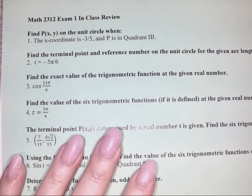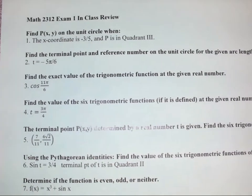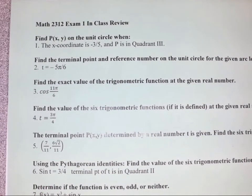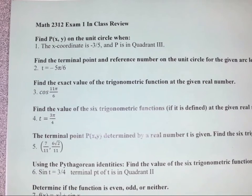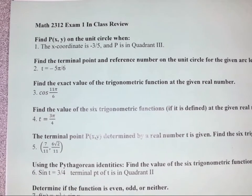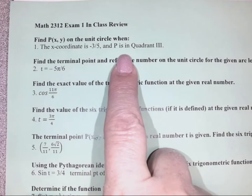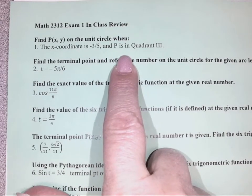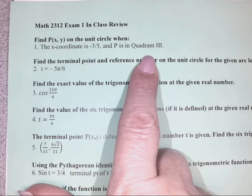We're doing the review for our first test in PreCal, and we've got 16 questions here we're going to go over. This should help you with your review and hopefully cement anything that you're not sure of. We've got a point XY on the unit circle, and we want to find it. We're given the X coordinate, and we need to find what the Y is to find that point. The quadrant is 3.